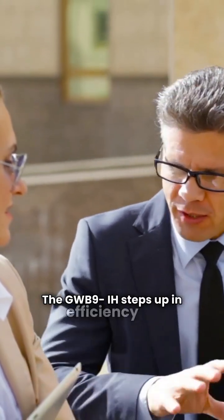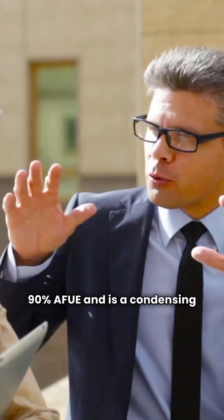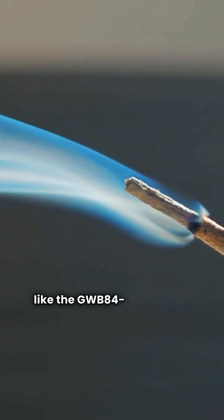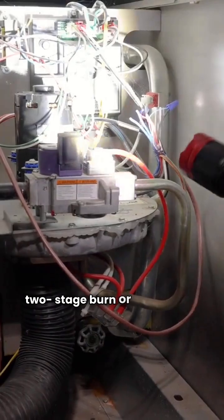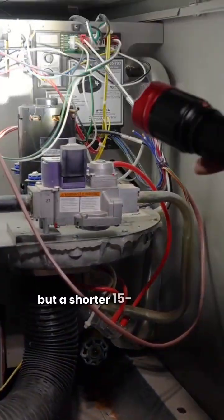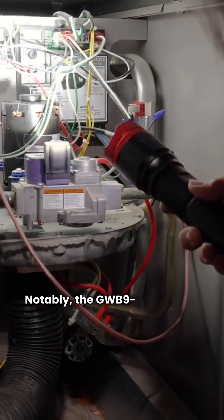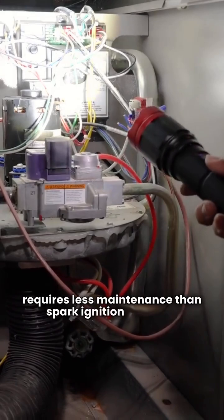The GWB9-IH steps up in efficiency to 90% AFUE and is a condensing boiler. It's also a floor-standing unit, and like the GWB84-IE, does not feature two-stage burn or modulating control. It offers a better 10-year parts warranty, but a shorter 15-year heat exchanger warranty. Notably, the GWB9-IH uses hot surface ignition, which is generally more reliable and requires less maintenance than spark ignition systems.